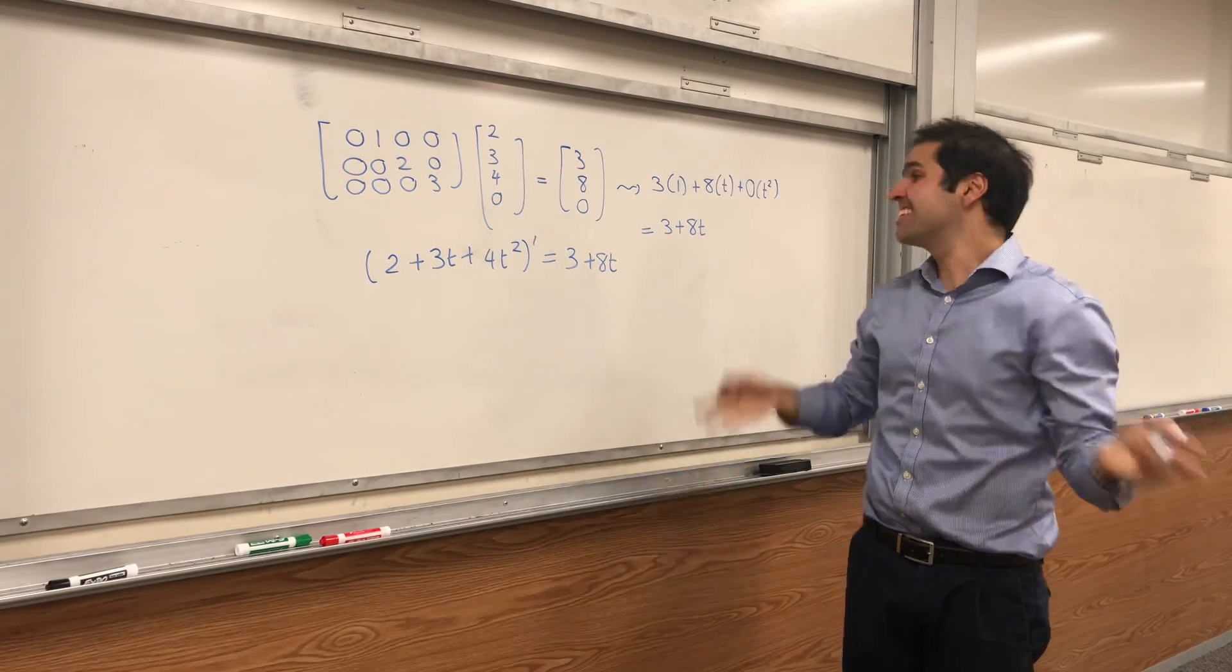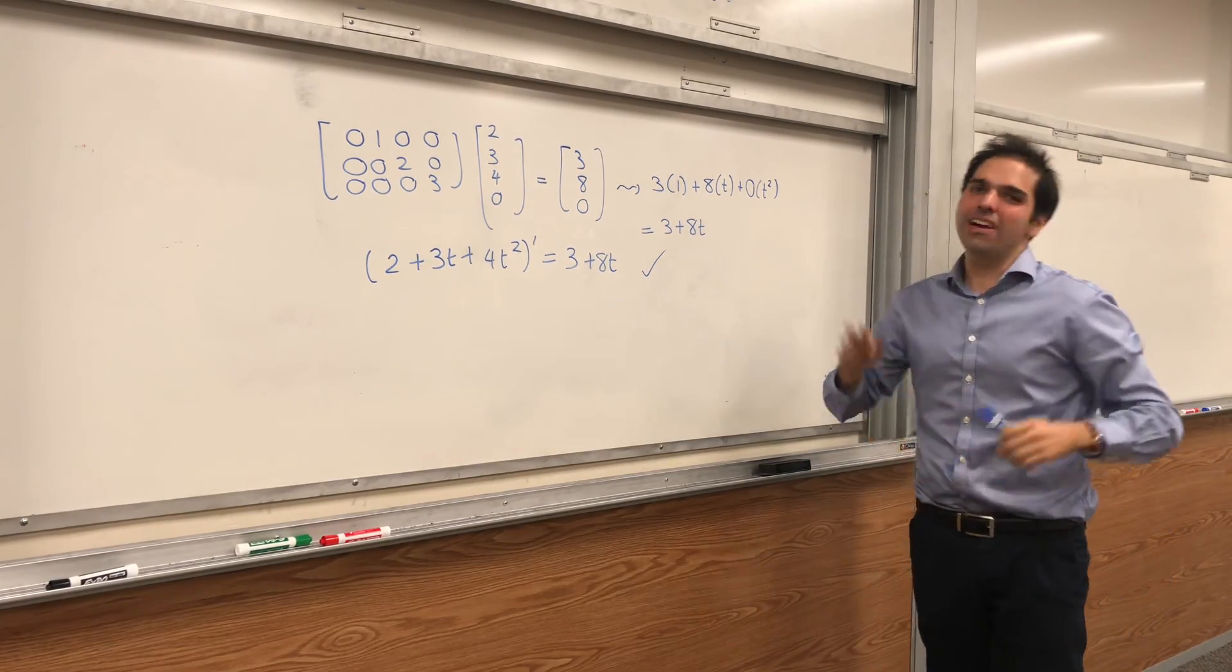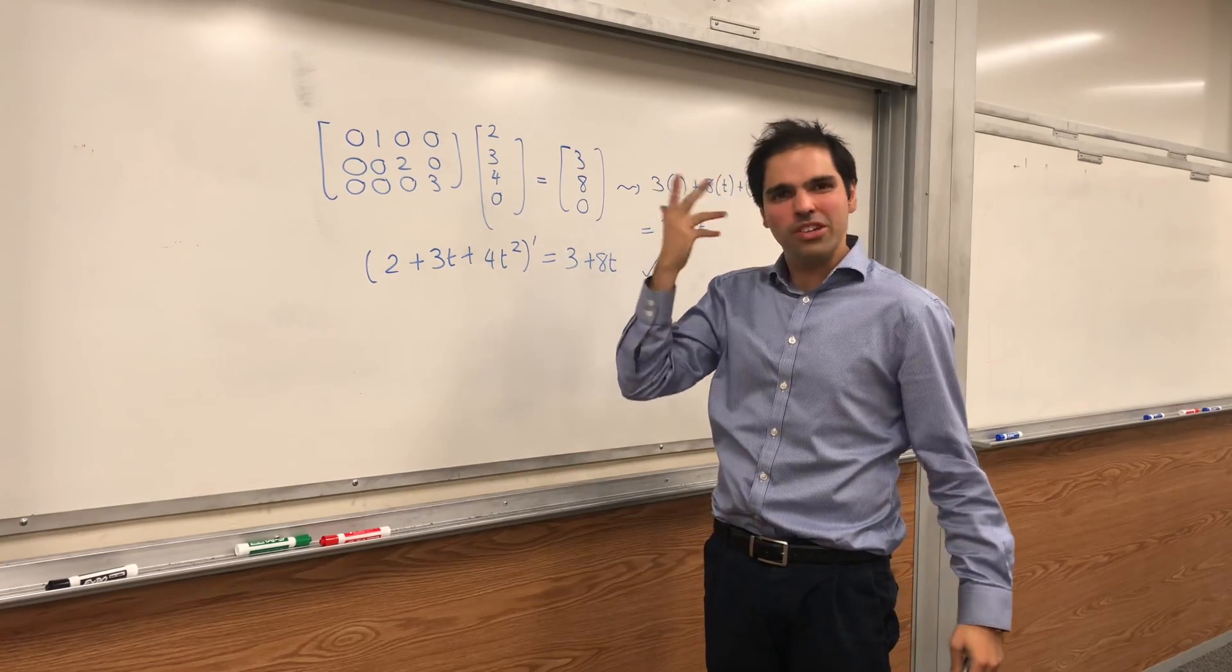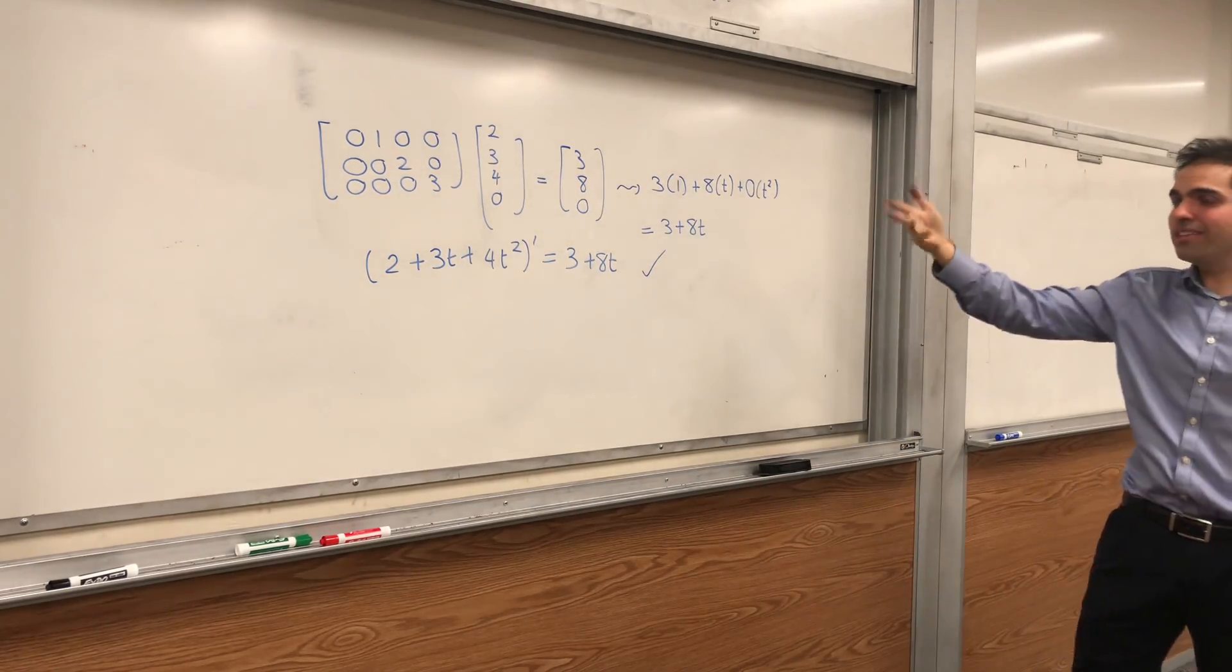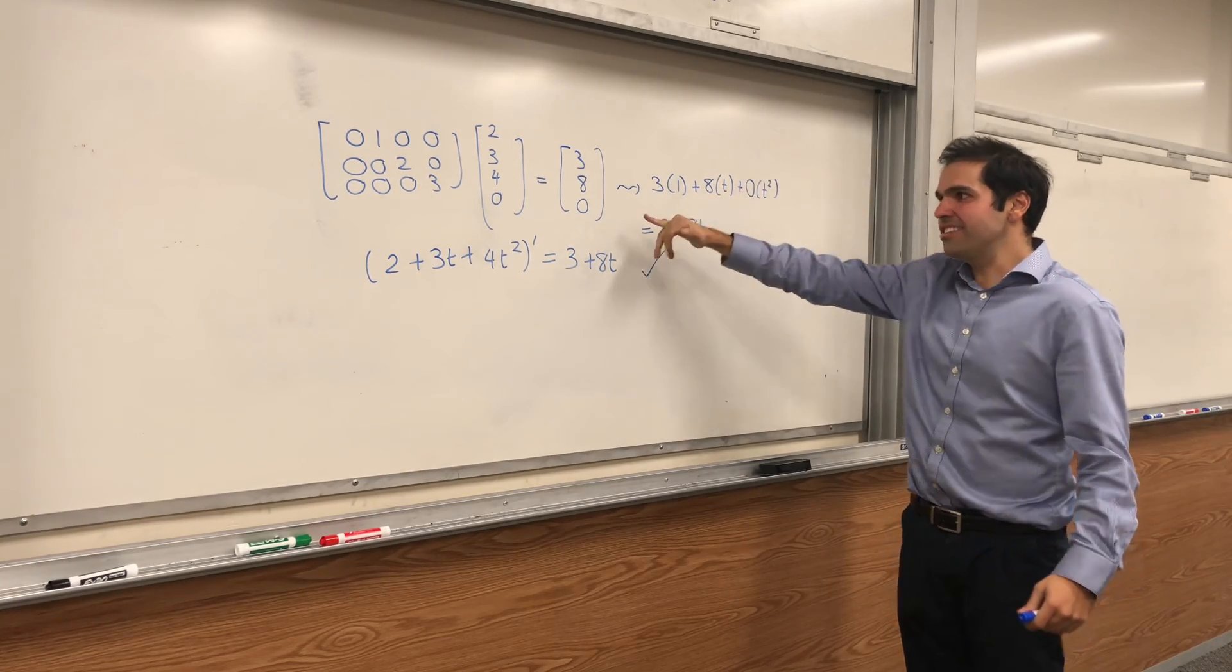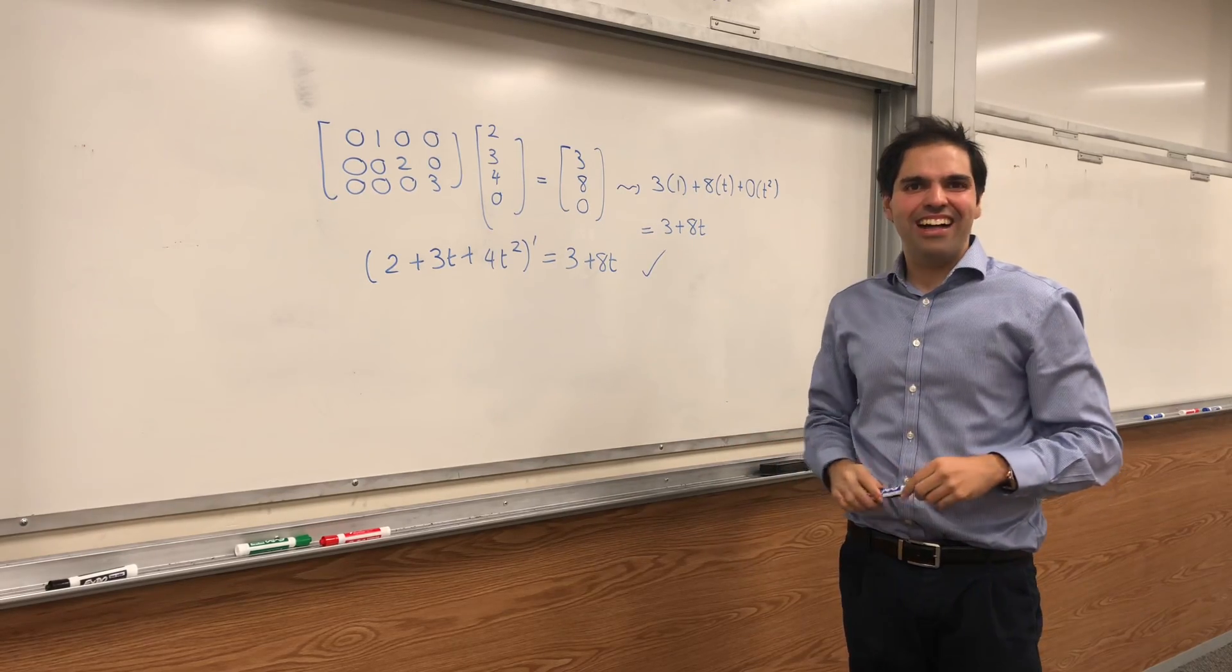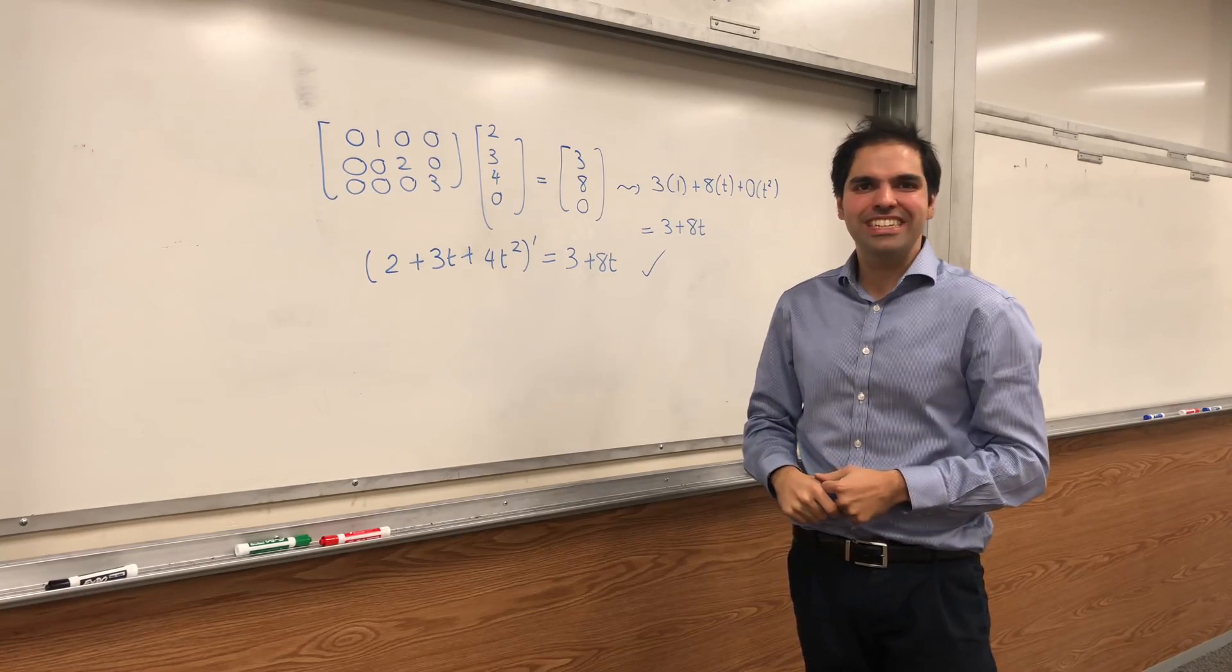And in fact, we did it the linear algebra way. And I'm telling you, I'm pretty sure your calculators do the same thing, but with a bigger matrix. So you input 2 plus 3t plus 4t squared, but your computer thinks that's just 2, 3, 4, 0, and then it multiplies with matrices, and in its head, it's 3, 8, 0. But really, to make you happy, it writes it as 3 plus 8t. So, this is really cool. I hope you like this little linear algebra extravaganza. If you want to see more math, please make sure to subscribe to my channel. Thank you very much.